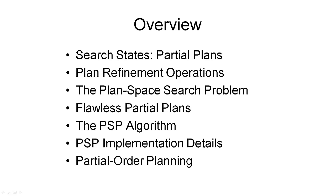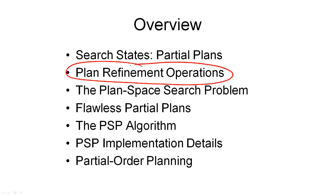We have now seen what the search states in our new search space look like. They are partial plans, and each partial plan consists of the four components just described. Next, we will look at the state transitions in our new search space. These state transitions can be understood as plan refinement operations, as they take a partial plan and refine it into a different partial plan. And since there are four components to a partial plan, there are also four principle plan refinement operations that we will look at next.